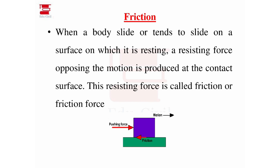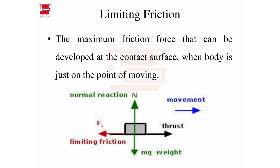Opposing the motion — that is the frictional force. Now we have limiting friction. The body is on the surface with a normal reaction at the bottom. I apply a force to the right side, and in the opposite direction the frictional force acts. If I apply many forces — 5N, 10N, 15N — the body is just about to move. The maximum friction force developed at the contact surface is the limiting friction.